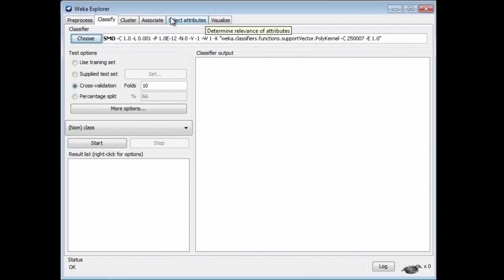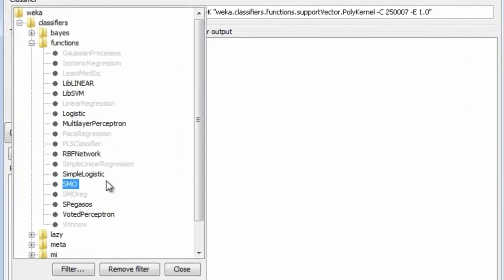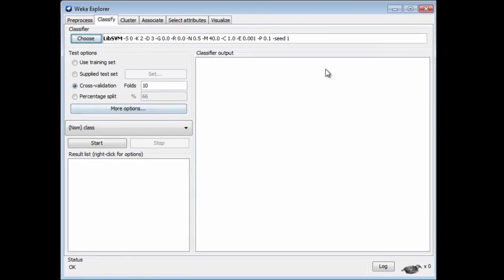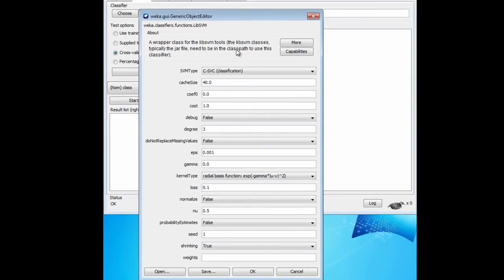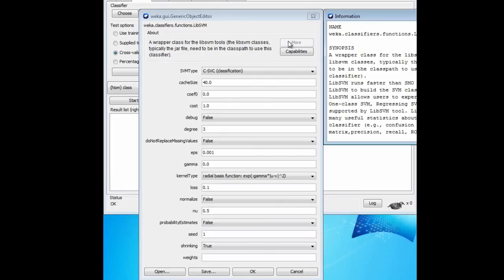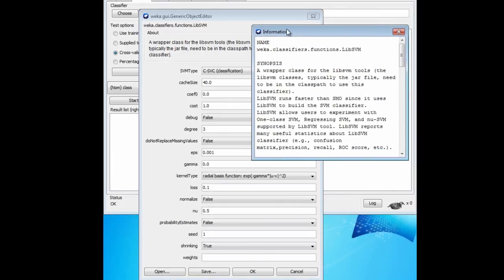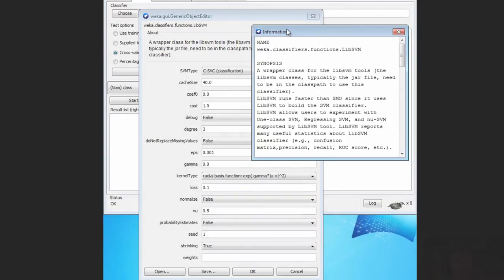There are other more comprehensive implementations of support vector machines in Weka. There's a library called LibSVM, an external library, and Weka has an interface to this library. This is a wrapper class for the LibSVM tools. You need to download these separately from Weka and put them in the right Java class path. You can see there are a lot of different parameters here, and in fact, a lot of information in this support vector machine package.